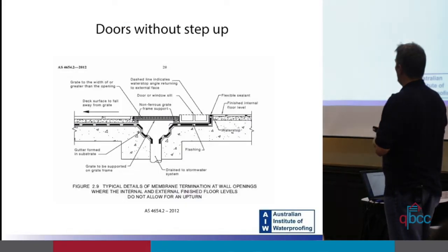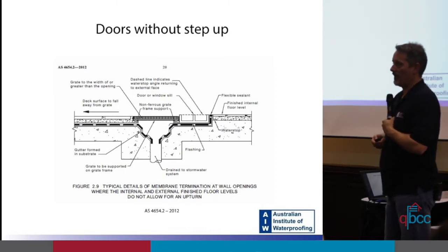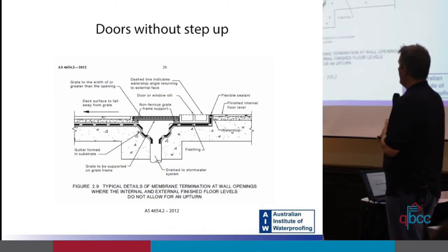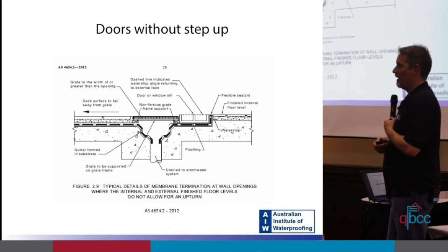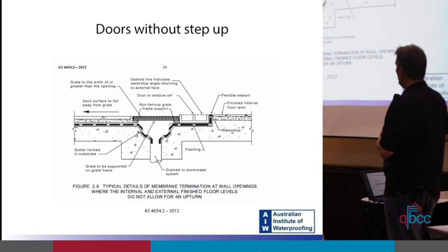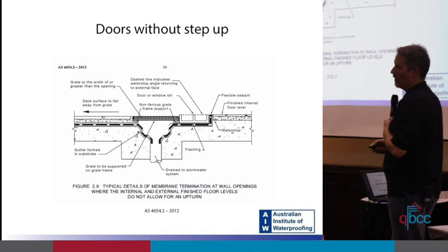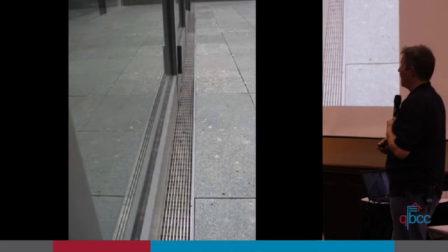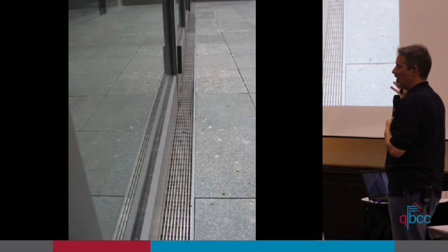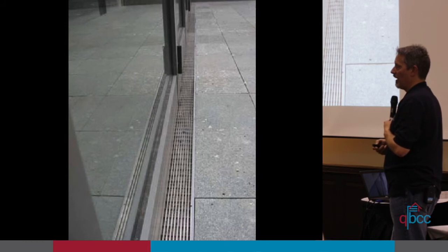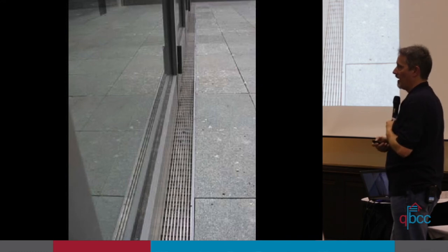For doors without a step — which designers seem to prefer for a smooth level transition from inside to outside — the standard has a way of doing that. It wants the door sitting in a little rebate with a grate right outside the door. That's all well and good for concrete or masonry construction, but it's a little more difficult if it's a compressed fibro deck. Also, compressed fibro decks have to drain off the outside edge, so you've got to calculate that in as well.